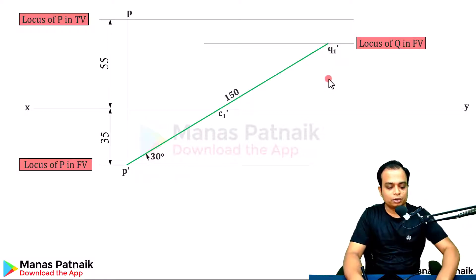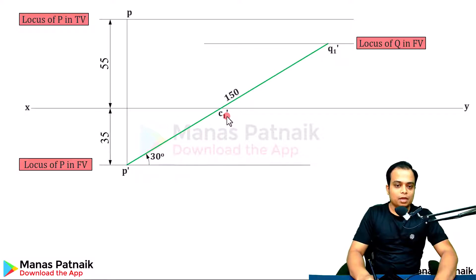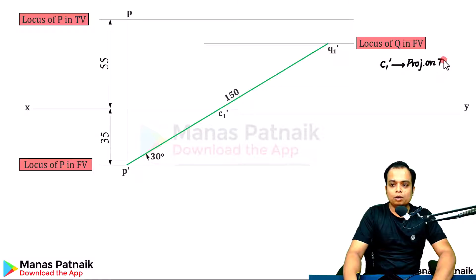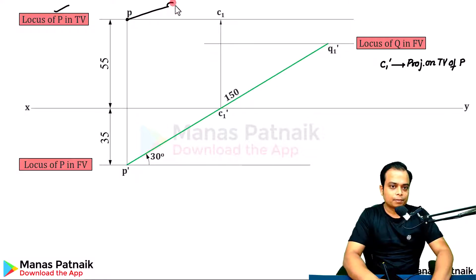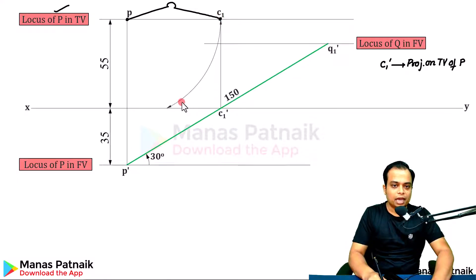All the datas have been exhausted. The next thing to do is, you want to create the top view. Take a look at C1 dash. Project on top view of P. Where is the locus of top view of P? Here. If this is C1 dash, this has got to be C1. When you do that, keep one leg of your compass at P, other leg at C1. You've got to rotate it this way. C is along this reference line XY. What you have just got, this very point is nothing but point C or its corresponding top view.